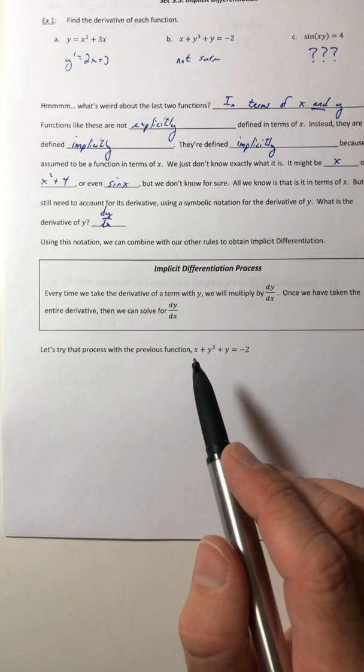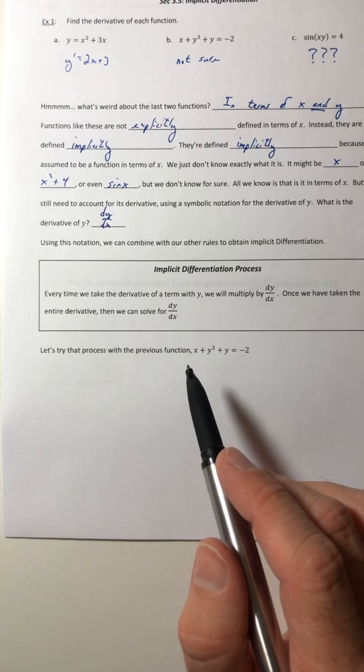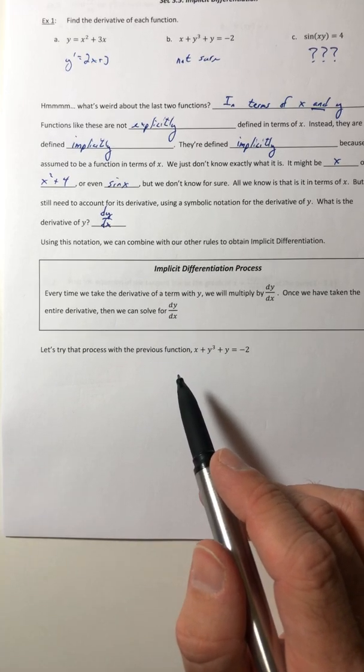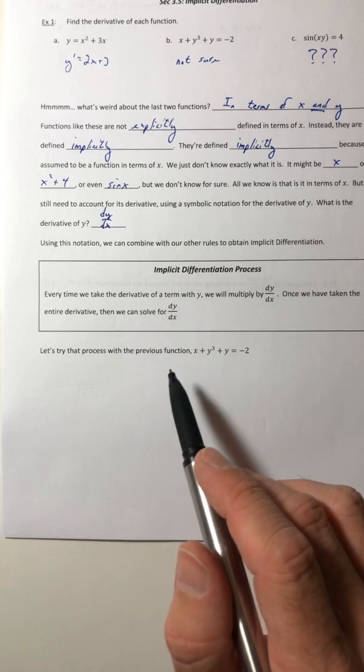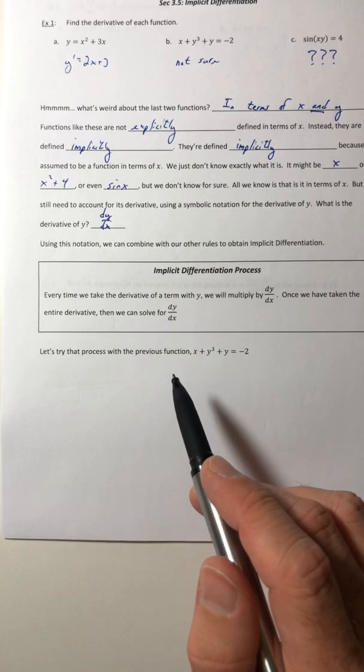So once you've taken the entire derivative of the whole function, you can then solve for dy dx. So your answers, a lot of times, are going to have x's and y's, both of them in there. Sometimes that might just be an x, sometimes it might just be a y. You're not going to know really until you actually try to solve for it.